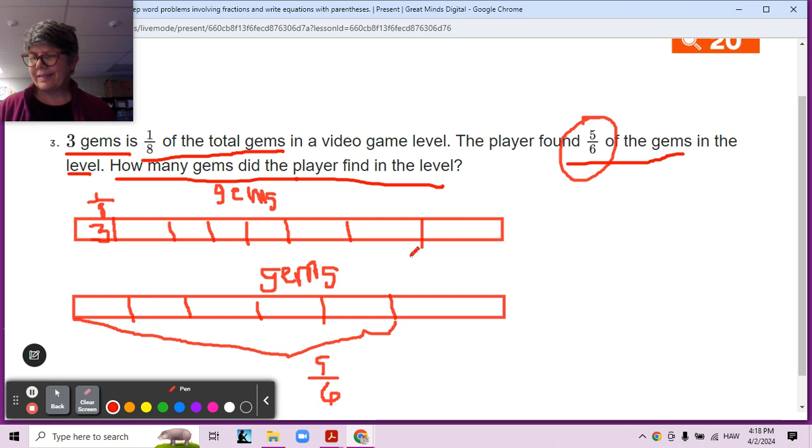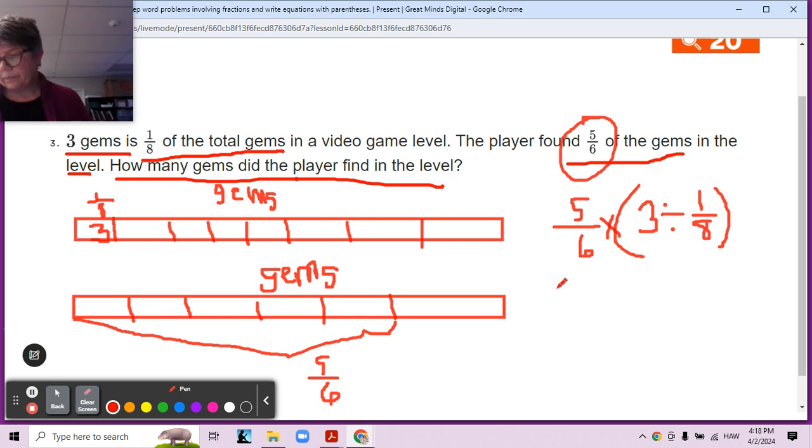Do you think we can write an equation to go with this? Like three is one-eighth of what total, right? Three is one-eighth of what? And then we know that that part is multiplied by five-sixths because they got five-sixths of the totals. So this is going to help us find the total, and then this is going to help us find how many they got.